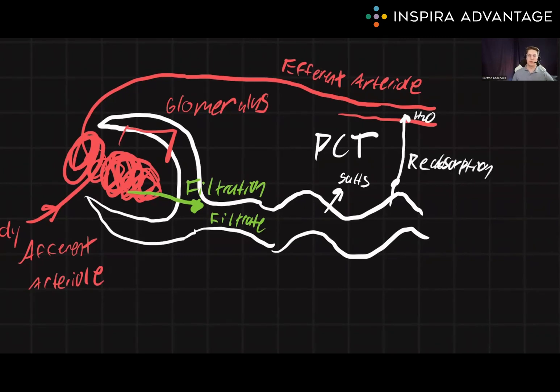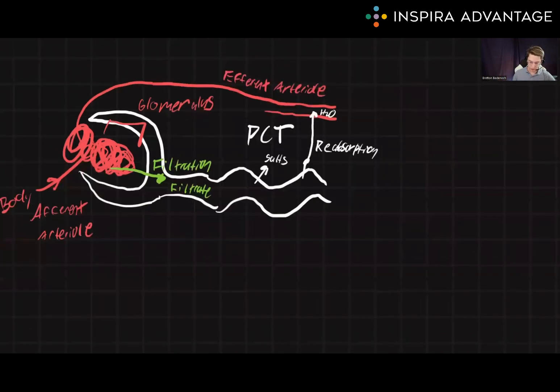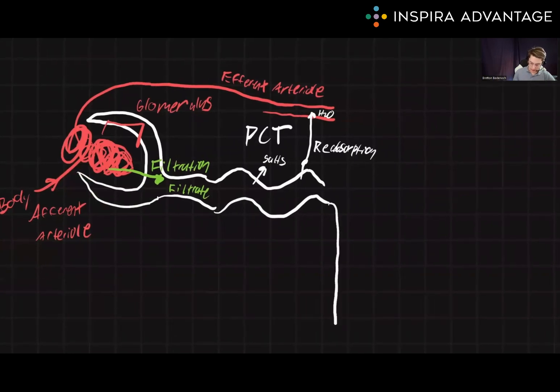It's called reabsorption because the first absorption happened when you ingested a substance, and it went from the digestive system into the bloodstream. So, now it's being reabsorbed into the bloodstream. The filtrate will then move from the PCT to the next part of the kidneys, the loops of Henle.